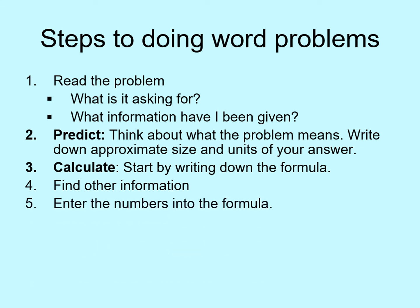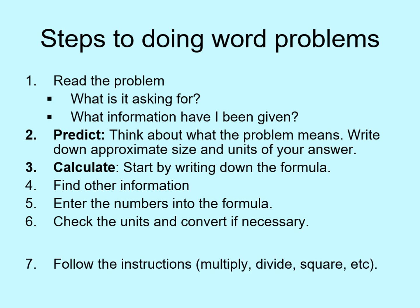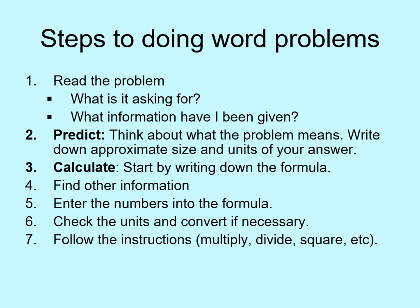In step five, you write down the formula again, but this time you put in all of the numerical values and their units. The units are important because of step six: checking the units and converting. We'll look more closely at unit conversions a little later, but this is where you would do it. Step seven is where you actually solve the problem — just do whatever the algebraic formula says to do. If it says multiply speed by time, you do that. Make sure you keep track of the units in every line.